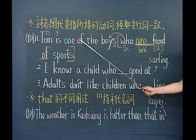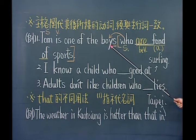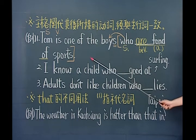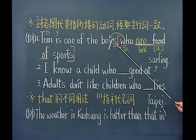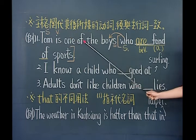整句话翻译：汤姆是那些喜欢运动的男孩之一。记得名词跟形容词子句翻译时，形容词先翻，再翻名词。所以是「那些喜欢运动的男孩之一」，喜欢运动的是很多男孩，因为这里告诉你boys是复数，who are fond of sports——喜欢运动的男孩有很多个，汤姆只不过是那些男孩的其中一个。